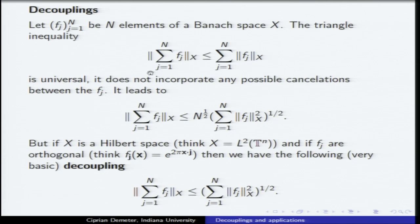You want to think about other spaces, the non-Hilbert space. I'm going to denote by e(z) the exponential associated with real frequency z. Here's a lovely example. The space X is now L4. It turns out that the squares are separated enough, or have enough geometry, so that you actually have almost an L4 decoupling — there is an n-to-the-epsilon loss. An interesting question, probably very difficult, is to prove that if you go slightly below 4, the n-to-the-epsilon loss could be removed.